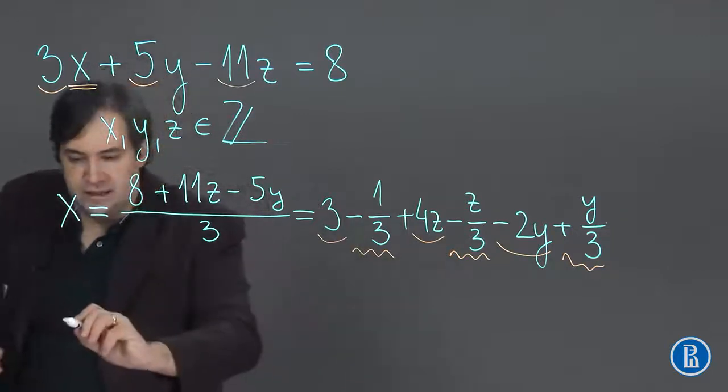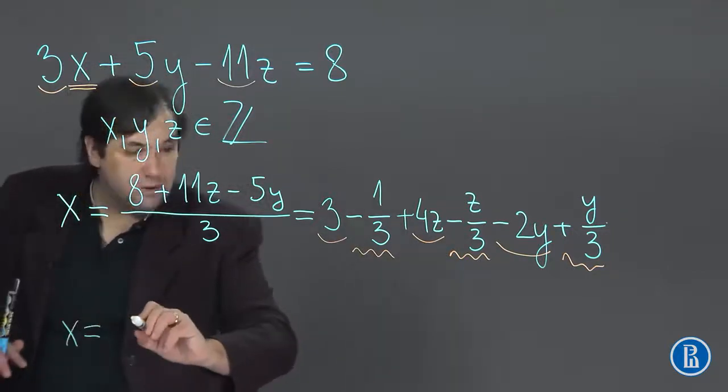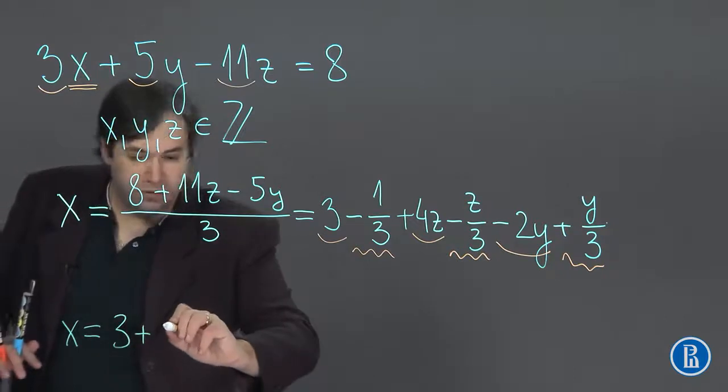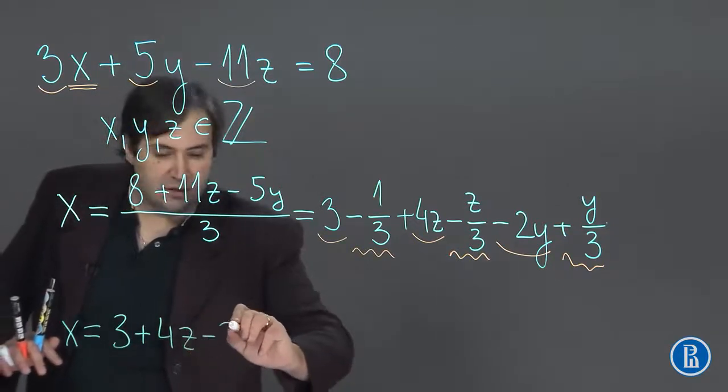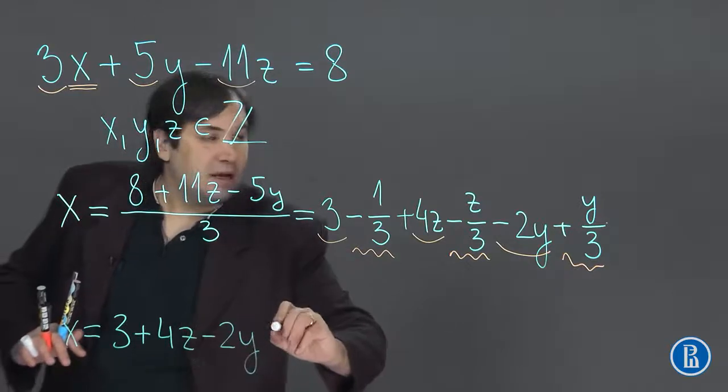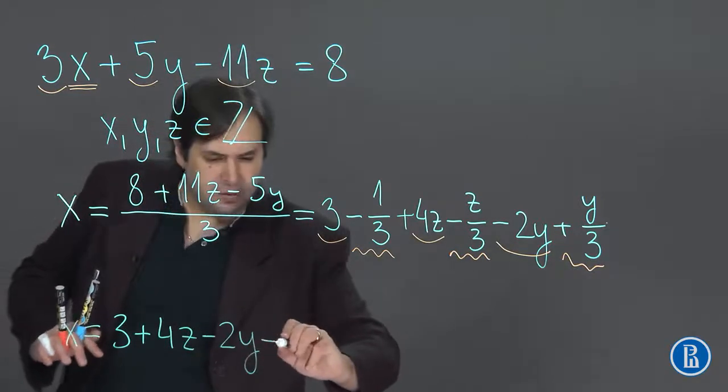We have that x is equal to 3 plus 4z and minus 2y and plus the fractional part.